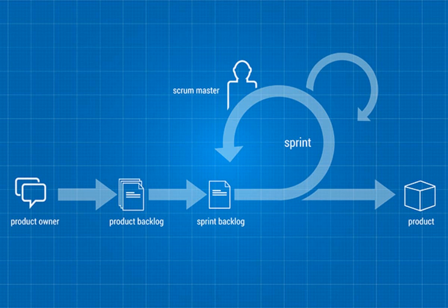Once we vet more detailed requirements or do a proof of concept to address a technical risk, we can sit back down with the customer after those spikes are completed. That gives us another checkpoint after sprint zero to recalibrate budget, schedule, and scope if needed — whether that means additional user stories or any other impact on the product backlog.